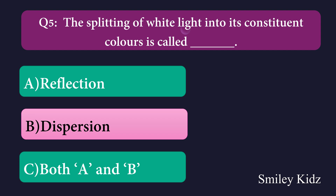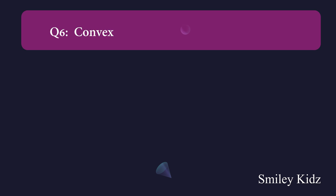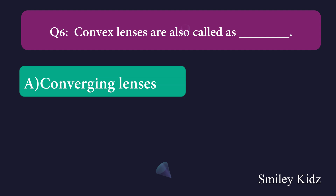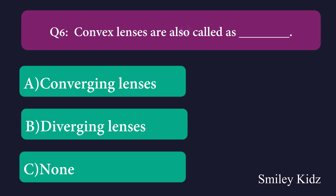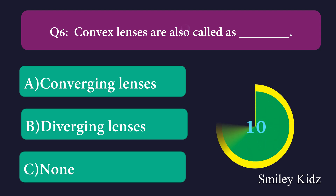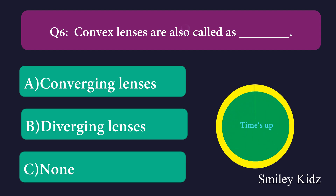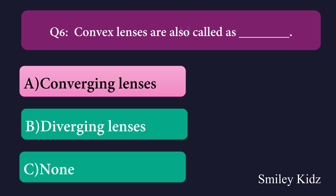Question number six: Convex lenses are also called as dash. Option A: converging lenses, Option B: diverging lenses, Option C: none. The right answer is converging lenses. Convex lenses are also called as converging lenses.